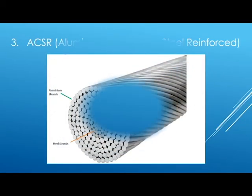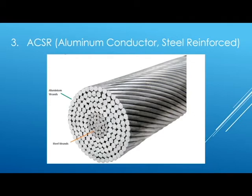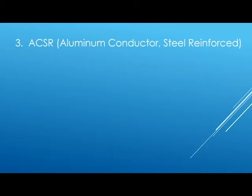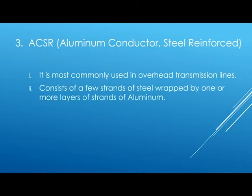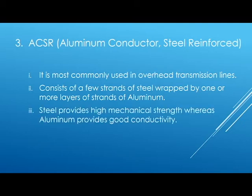Next is ACSR conductor, which stands for Aluminum Conductor Steel Reinforced. As its name suggests, ACSR is different from other conductor types because its strands are made of two different materials: steel and aluminum. ACSR is the most common type of conductor used in overhead high voltage transmission lines. It consists of a few strands of steel which are wrapped by one or more layers of aluminum strands.